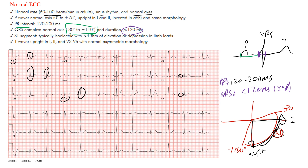The ST segments should be isoelectric or at least less than one millimeter of elevation or depression. The ST segment is at the end here — if it's elevated or depressed it shouldn't be more than one millimeter in the limb leads. Normally we don't want to see ST depression in the precordial leads. In terms of the T waves, they should be upright in those leads where the ventricular wave is heading that way — notice lead one has upright T waves and lead two as well.